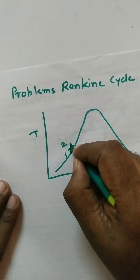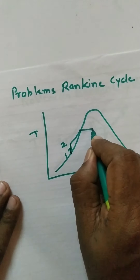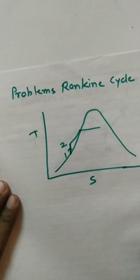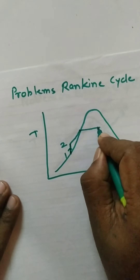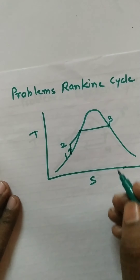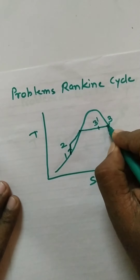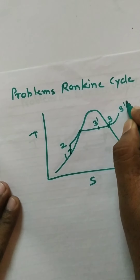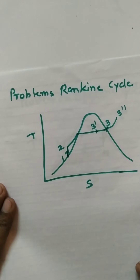Next, process 2 to 3 occurs in the boiler, where heat addition takes place at constant pressure. The location of point 3 depends on what quality of steam comes out of the boiler. If you get dry saturated steam, point 3 is on the saturated vapor line. If you get wet steam, it is point 3 dash. If it is superheated steam, it is point 3 double dash.